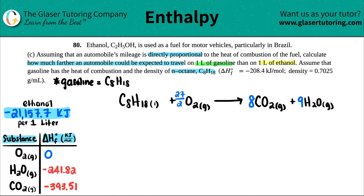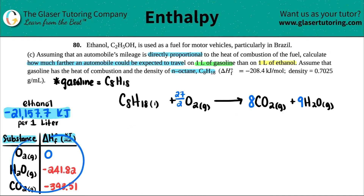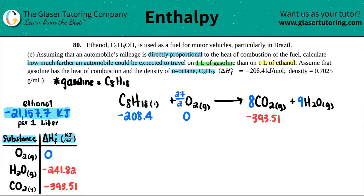Now we write down the ΔH formation values from the appendix. For C8H18: -208.4 kJ/mol. For O2: 0 (always zero for elements in standard state). On the product side: CO2 is -393.51 kJ/mol, and H2O gas is -241.82 kJ/mol.